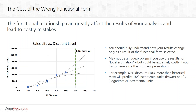It may not be a huge problem if you use the results for local estimation — to predict what you've already seen in the past. But it could be extremely costly if you try to generalize to new promotions. For example, we've never seen a 60% promotion for this product, but let's say you're considering running one. If you use the model that fits the data the best, you'd expect 18,000 incremental units. If you use the model that accounts for saturation, you'd get 10,000 units — roughly half. If 10,000 units is the true relationship, that's a costly mistake and you're going to lose a lot of money.